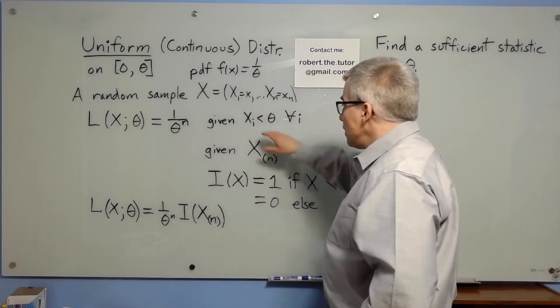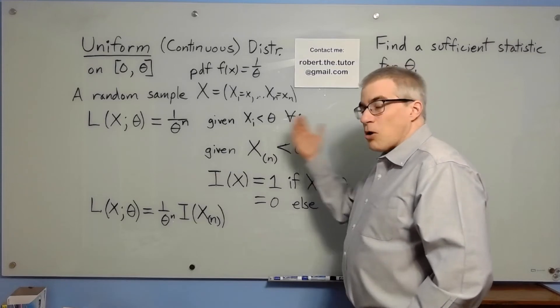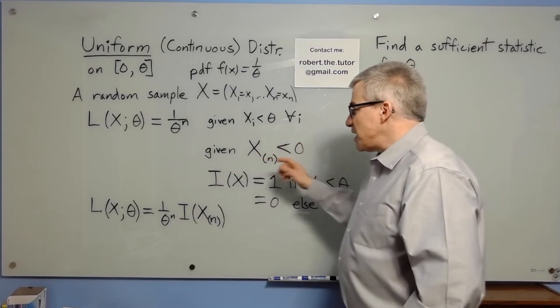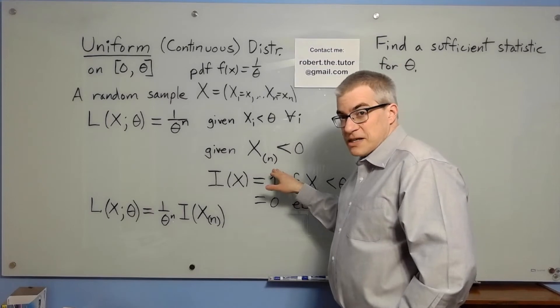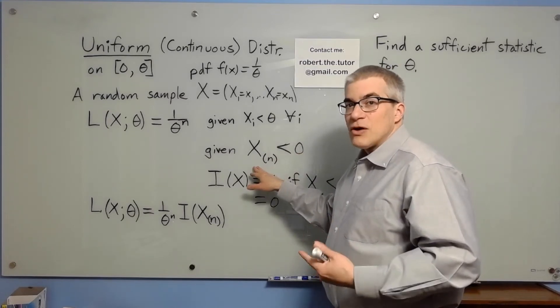That's given that all the xi's are less than theta. However, saying all the xi's are less than theta is the same thing as saying that the largest of the xi is less than theta, the max x, the nth order statistic.